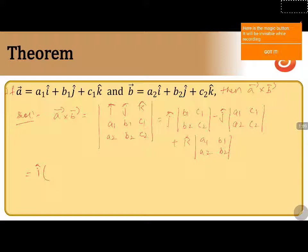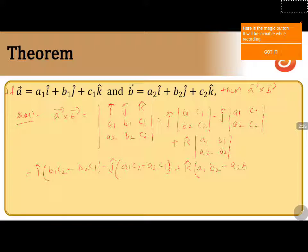Now by expanding this, i-cap gives b1 c2 minus b2 c1. Minus j-cap into a1 c2 minus a2 c1. Plus k-cap into a1 b2 minus a2 b1.